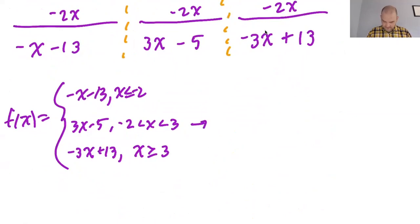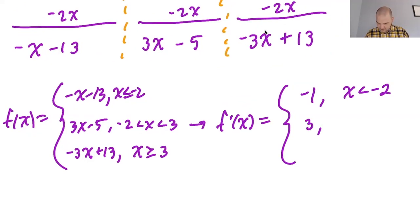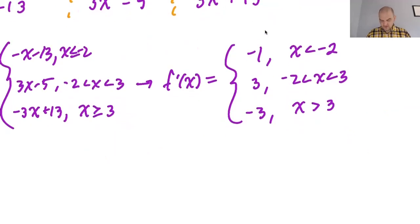From here, I can find f prime. So f prime of x is going to be negative 1. We don't include the negative 2 because we don't know if it's differentiable at negative 2. These are all linear, so the slopes are just the slopes of the lines. And you can actually see this thing is definitely not differentiable at negative 2 or 3.